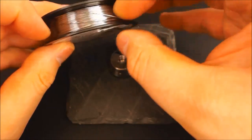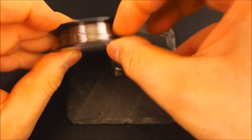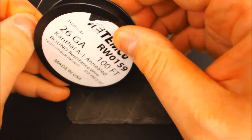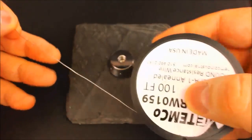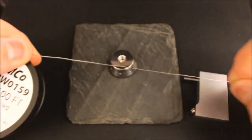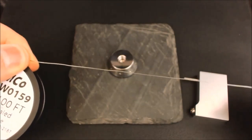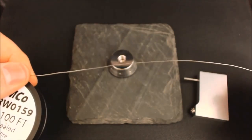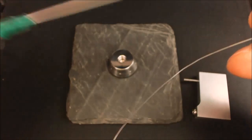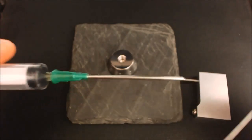26 gauge is one of my favorite types of wire to use for DNA devices and also for mechanicals because you can get a nice number of wraps. I usually do nine or ten wraps, which comes out to about 0.9 to 1 ohm, perfect for DNA devices.